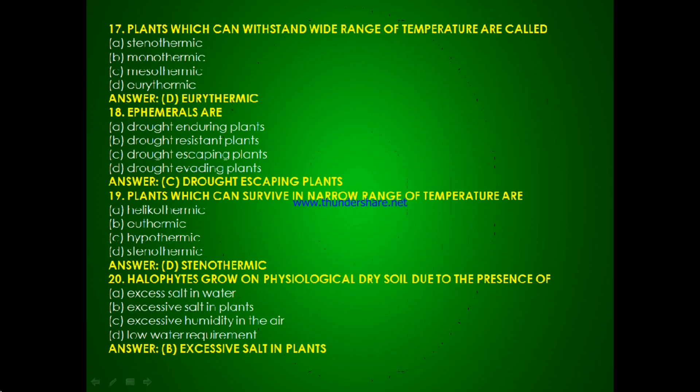Question 16: Ephemerals are — drought-enduring plants, drought-resistant plants, drought-escaping plants or drought-evading plants? The answer is C, drought-escaping plants. Question 17: Plants which can survive in a narrow range of temperature are — hecothermic, eurythermic, hypothermic or stenothermic? The answer is D, stenothermic.